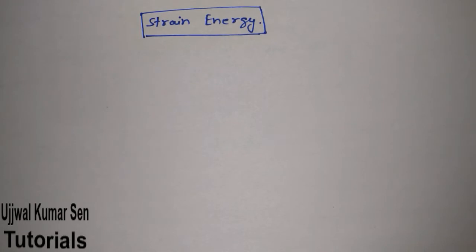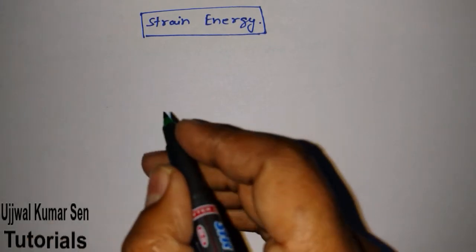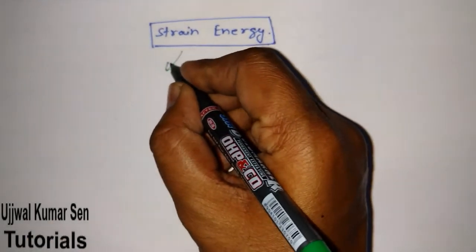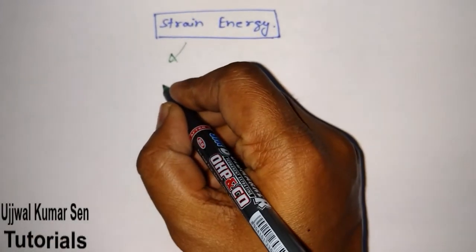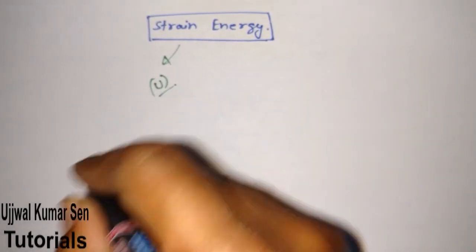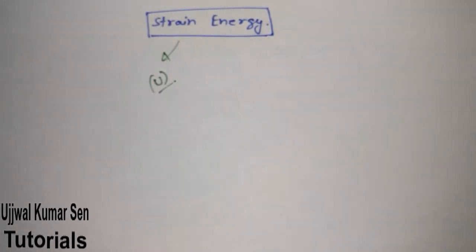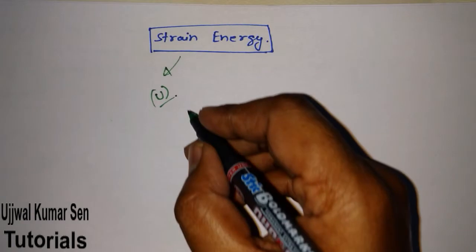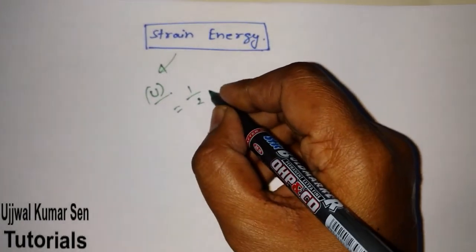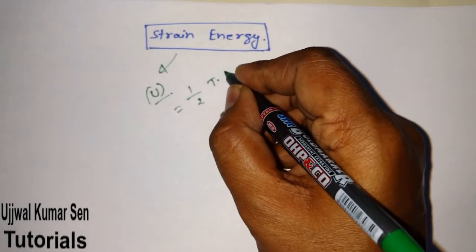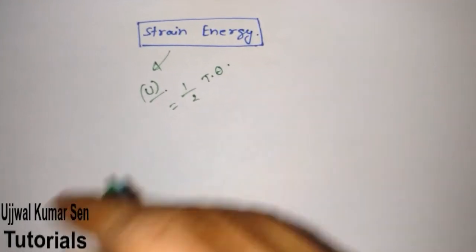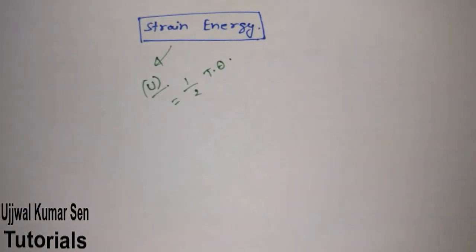Strain energy is energy which is produced because of strain. Now, how do we denote strain energy? We denote strain energy by capital U. Capital U is equal to the basic formula: half T theta.